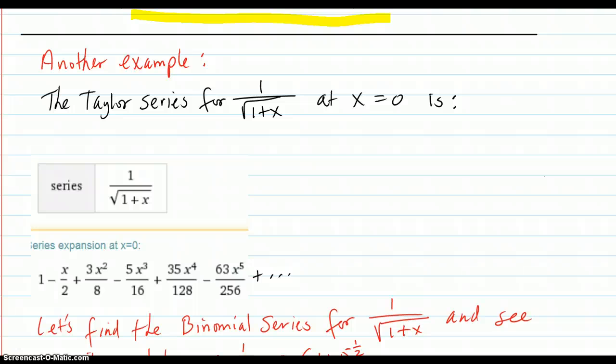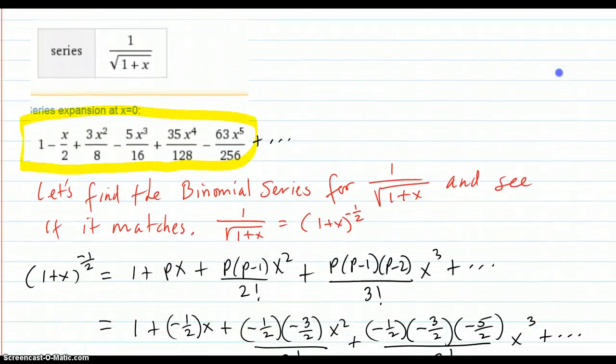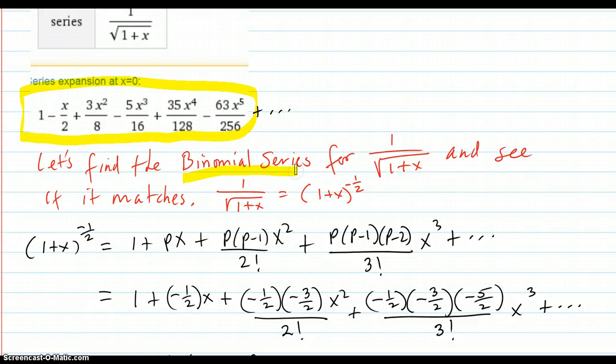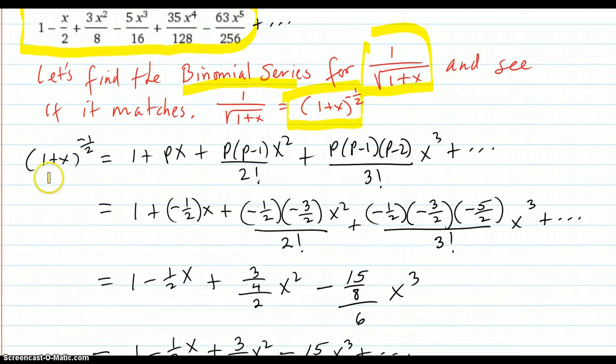Here's another example. This time we have 1 over square root of 1 plus x. We're going to expand it about 0. When you do that with the Taylor series, you get out of Wolfram Alpha this right here. But that would require taking all those derivatives and figuring out the c_k and then plug it in. So, let's just see what we can do with the binomial series for the same function, because we realize that you can rewrite it as 1 plus x to the negative 1 half. That's 1 plus x to the p.